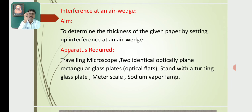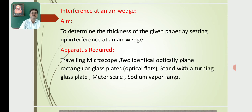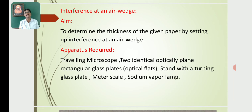The apparatus required includes two identical optically plane rectangular glass plates, a travelling microscope, a meter scale, and a sodium vapour lamp. These are the equipment needed to arrange the Air Wedge experiment for the determination of thickness of the given paper.